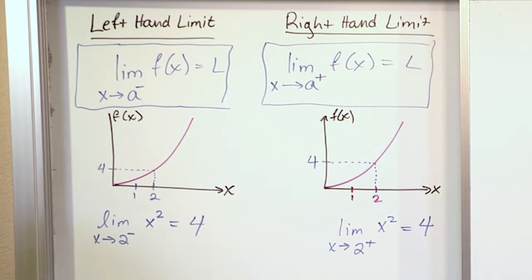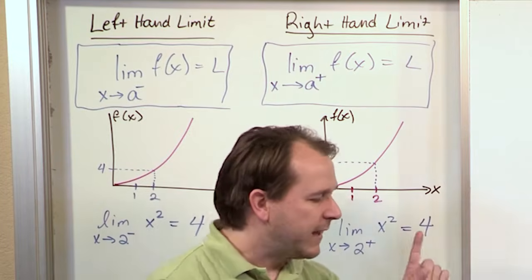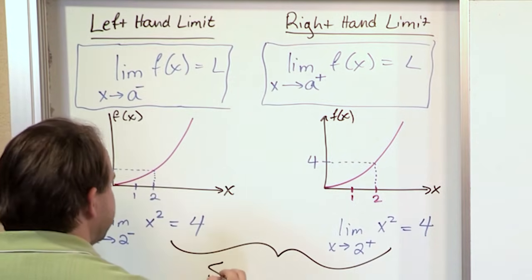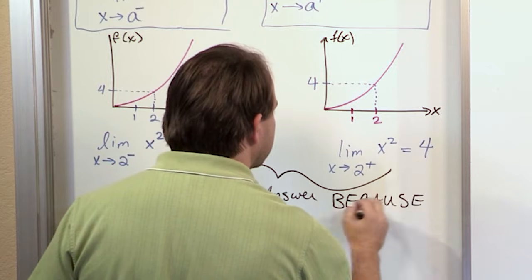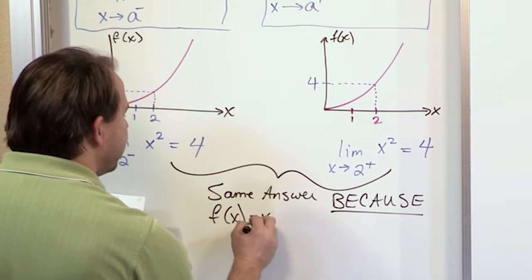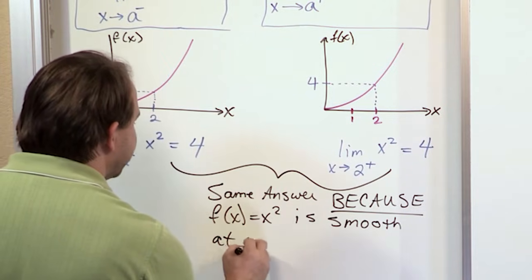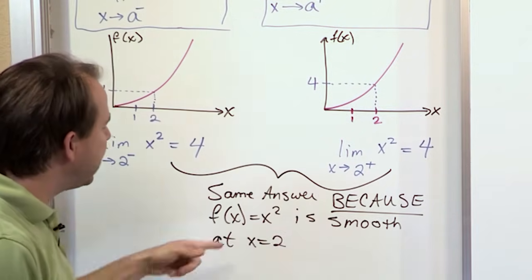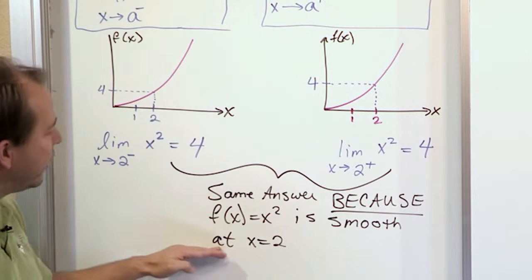You might look at this and say, who cares? I'm just approaching from the left, approaching from the right, and I got the same answer in both cases. We got the same answer in both cases because f of x = x squared is smooth at x = 2. The reason we got the same answer whether approaching from the left or the right is precisely because this specific function is a smooth function — another word for that is a continuous function — at the point of interest.